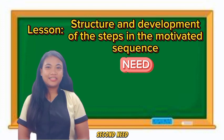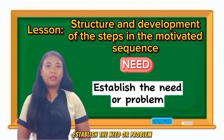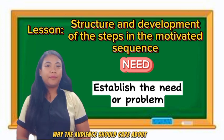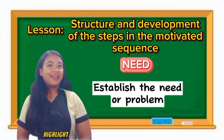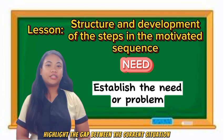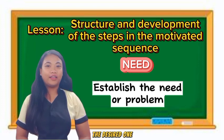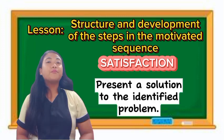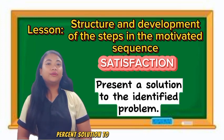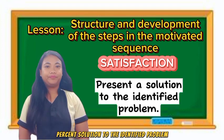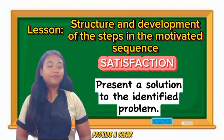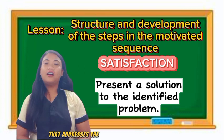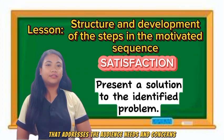Second is need. Establish the need or problem. Clearly articulate why the audience should care about the topic. Highlight the gap between the current situation and the desired one. Third is satisfaction — present a solution to the identified problem. Provide a clear, effective solution that addresses the audience's needs and concerns.